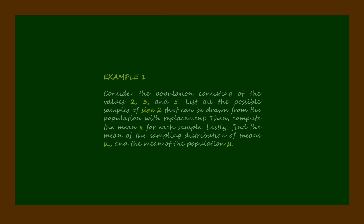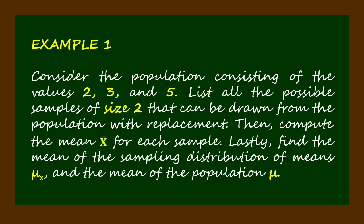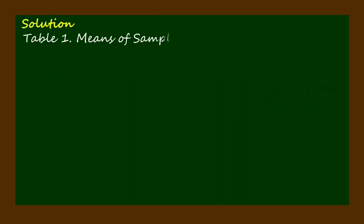To figure out how to find the mean of the sampling distribution of means mu sub x, and likewise the mean of the population mu, let's have Example 1. Consider the population consisting of the values 2, 3, and 5. List all the possible samples of size 2 that can be drawn from the population with replacement, then compute the mean bar x for each sample. Lastly, find mu sub x and the mean of the population mu. For the solution, let's construct Table 1: means of samples drawn with replacement from the population.